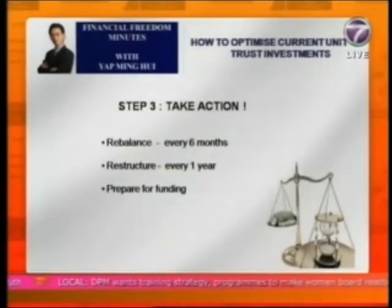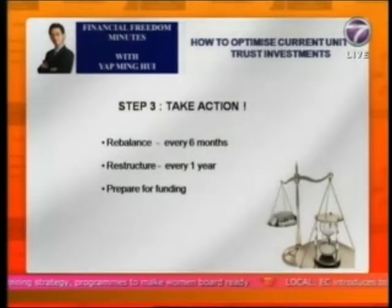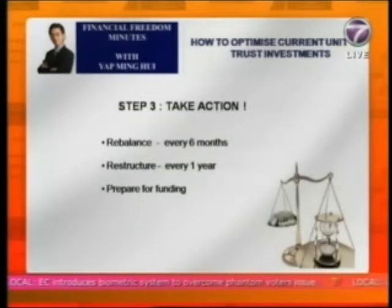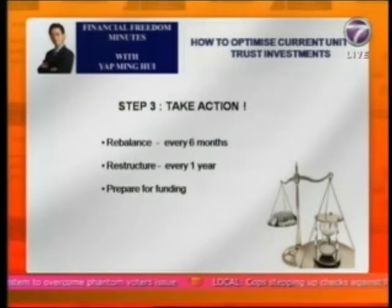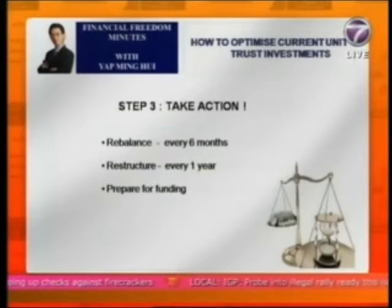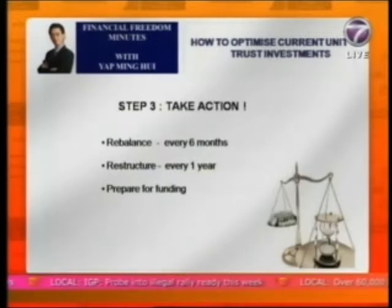The second action you can consider is to do restructuring every year. Which means if you have a portfolio of five funds and one fund — say a China fund — seems to be performing lagging behind compared to other China funds in the Malaysian market, then what you can consider is to replace that China fund with a China fund from another company. This is what I mean by restructuring — replacing some of the underperformers with better performing funds. I would suggest you do it every one year.